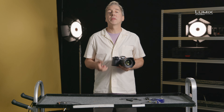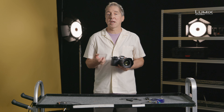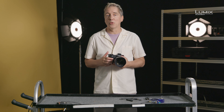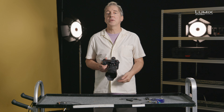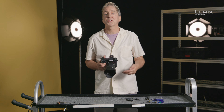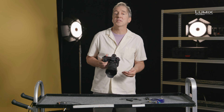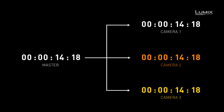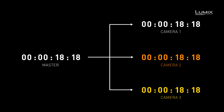If you're working with other timecode capable cameras or audio devices, you can use cables to synchronize across the various devices, choosing whether to make the S1H or GH5S the master or slave device if you have an external timecode generating device.